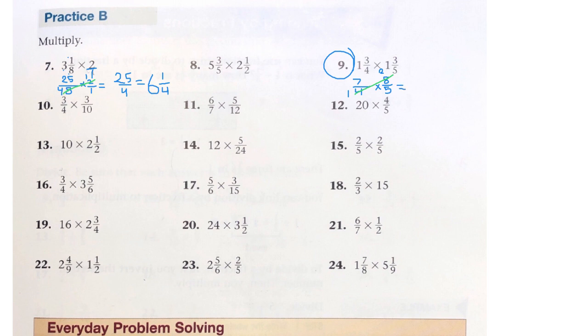So now we have 7 times 2 is 14. And then 1 times 5 is 5.